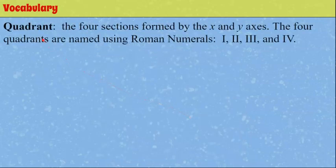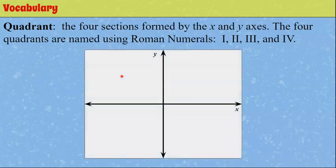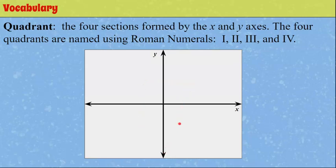Now let's talk about the quadrants. Here is our coordinate plane, and you can see it's divided into four sections formed by the x and y axes. The x-axis and y-axis intersect, sectioning this off into four sections. We want to talk about naming those quadrants so that we can say where ordered pairs or points are located on the coordinate plane.